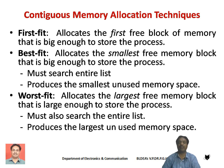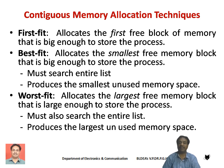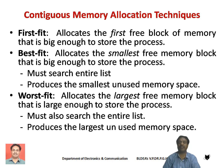Worst fit — this technique may be used when the size of the program is unknown or when the program size increases dynamically. The OS allocates the largest free memory block sufficient to store the process, but must scan the entire list of free blocks. The disadvantage is that a large portion of the memory block remains unused, leading to internal fragmentation.